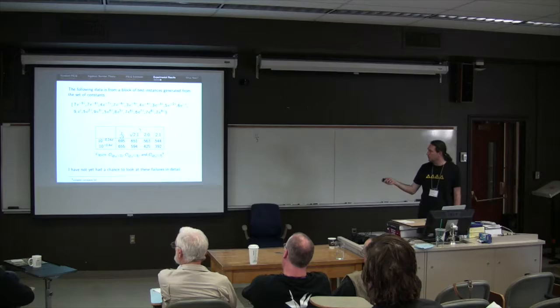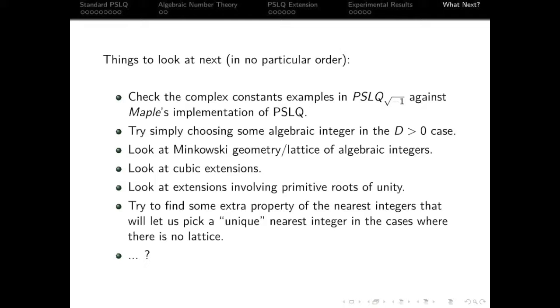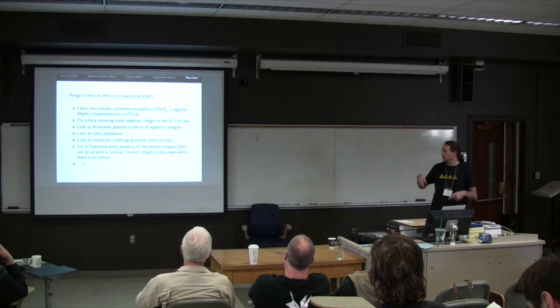So what's coming up next? I want to go back and check the complex examples against regular Maple's implementation of PSLQ, because that might tell me where I'm going wrong. I want to go back to the positive D case and just basically try picking an integer that's close and see if that actually gets them anywhere now that I've got a better feel for the parameters and the thresholds.